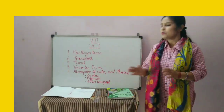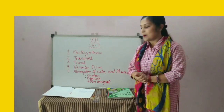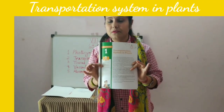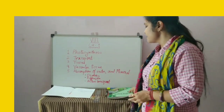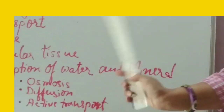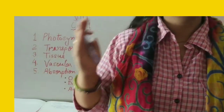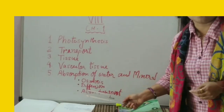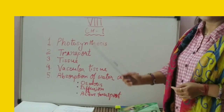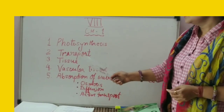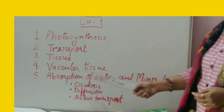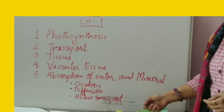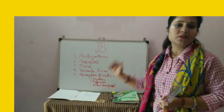Now, I want to start this chapter: Transportation System in Plants. I hope you can see this chapter. I have categorized it into 5 points. This chapter we will continue with different sessions, but today for the first session we are going to cover a few topics: Photosynthesis, Transport, Tissue, Vascular Tissue, and Absorption of Water and Mineral — subdivided into Osmosis, Diffusion, and Active Transport. One by one, we will deal with each topic.